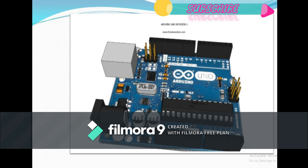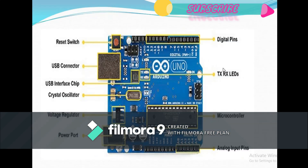Let's first have a look — these are labeled here. The first one is the reset switch, second one is the USB connector, that is the USB interface chip, crystal oscillator, that is the voltage regulator, that is the power port, microcontroller, analog input pins, these are the transmitter and receiver LEDs, and these are the digital pins.